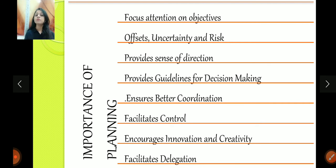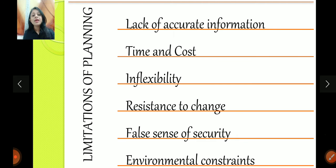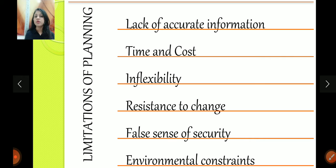We'll discuss delegation in detail in the next lecture when we discuss organizing. Then, limitations of course — every thing has limitations, and planning has limitations too. Lack of accurate information — because planning is done for the future, we can never be 100% sure of the information we have. Time and cost — planning is expensive in terms of both time and cost.